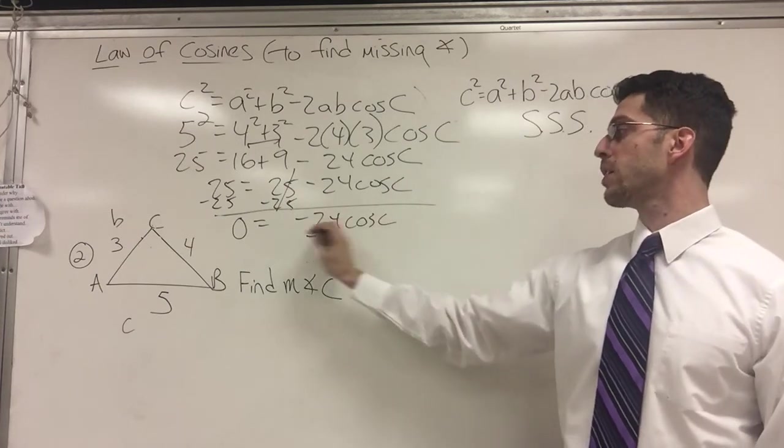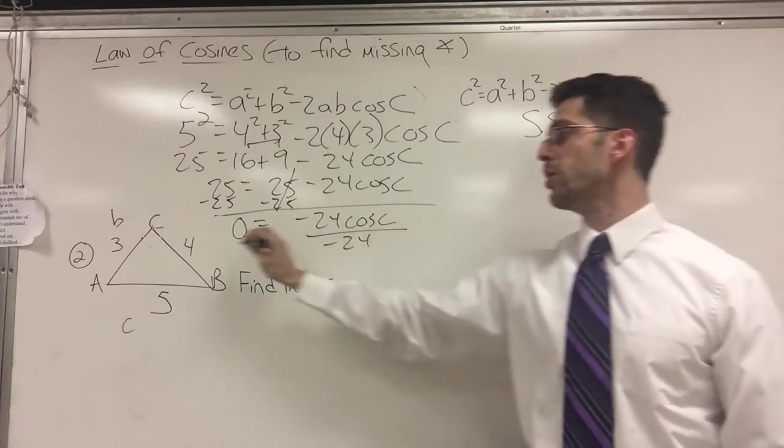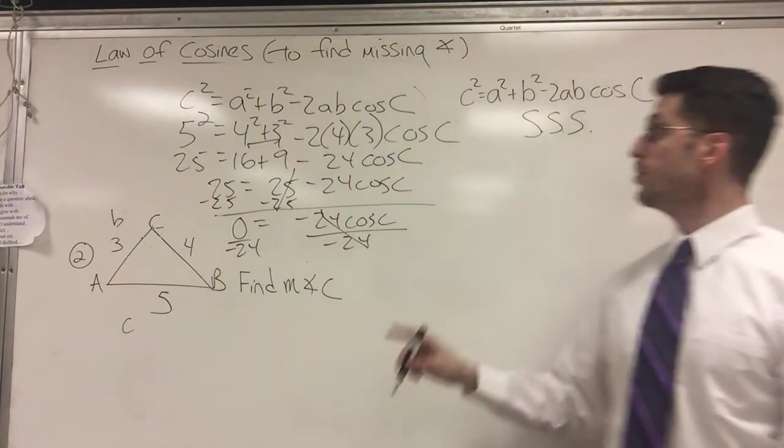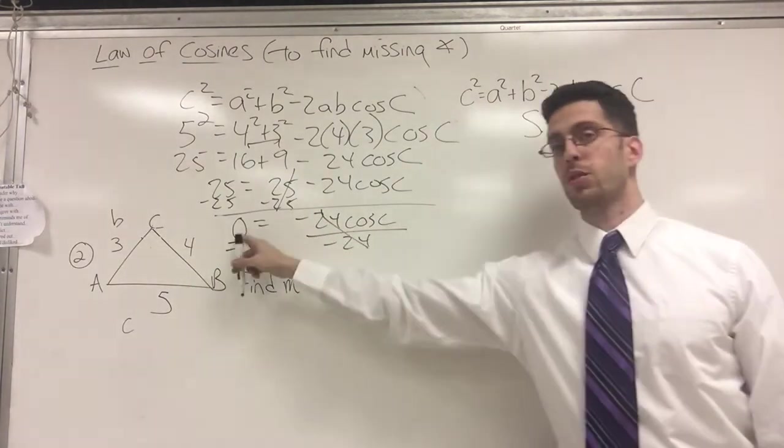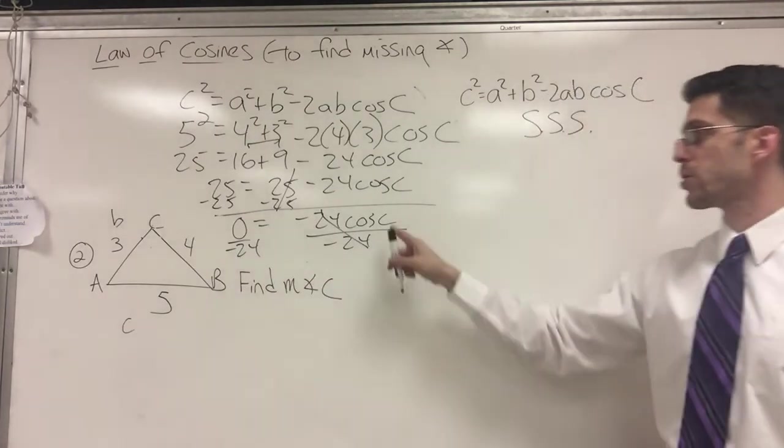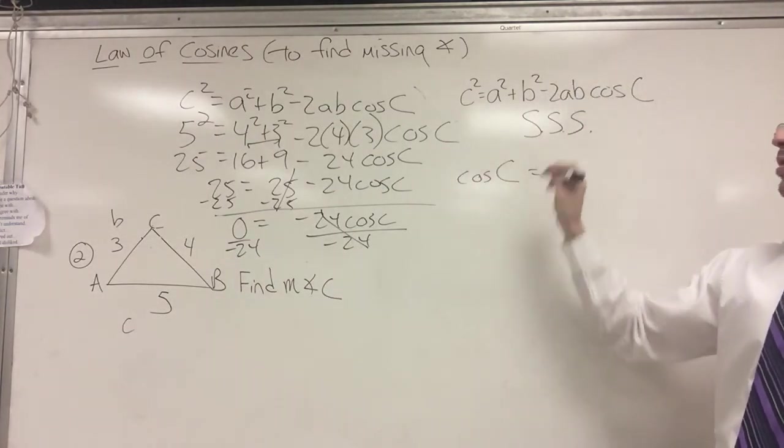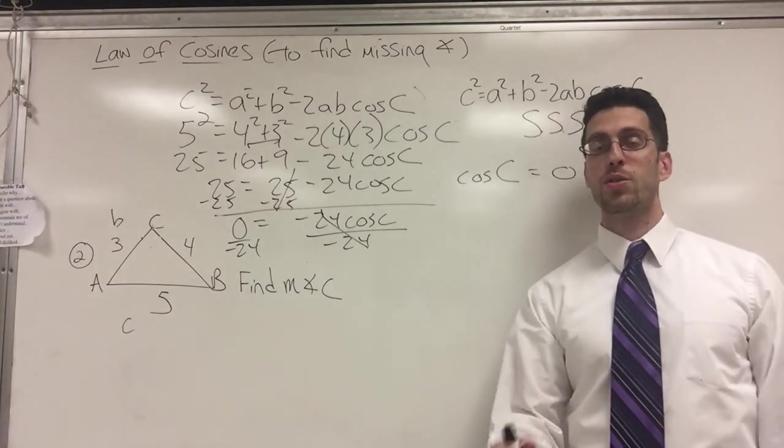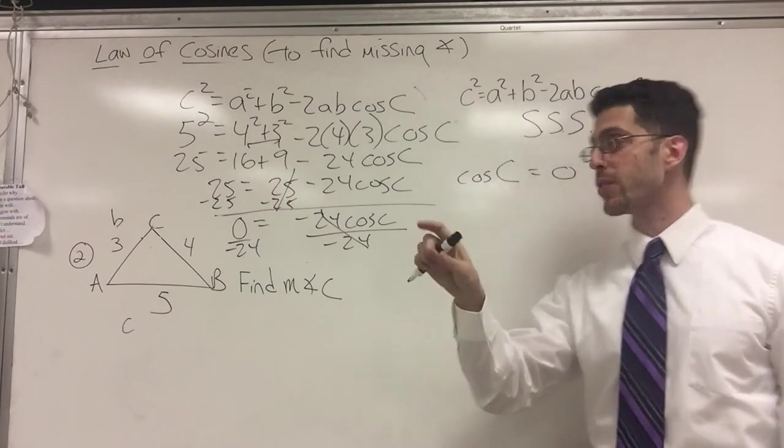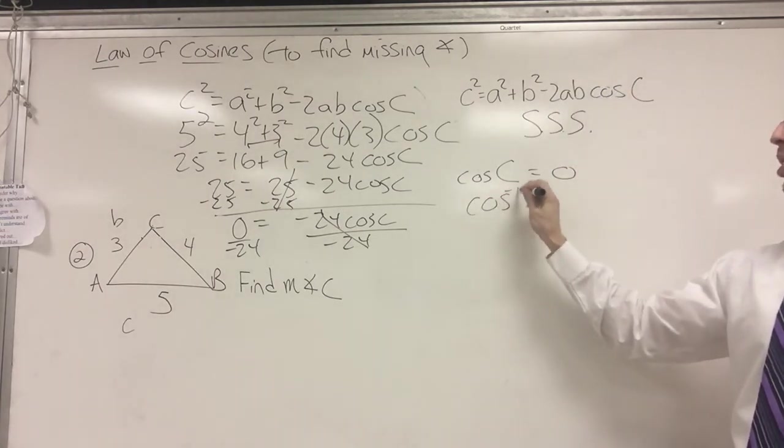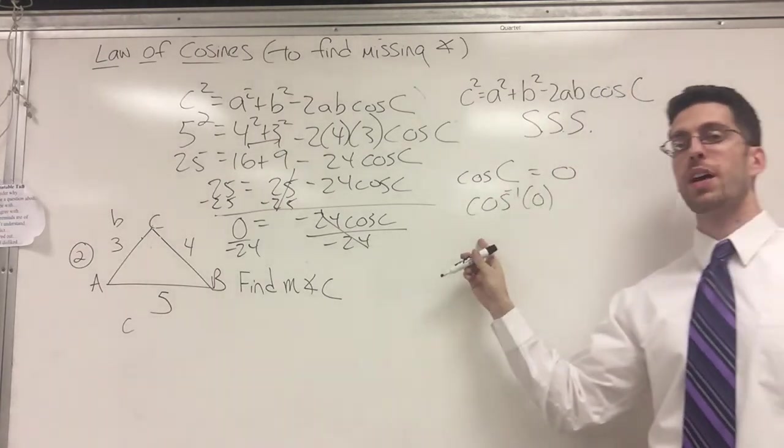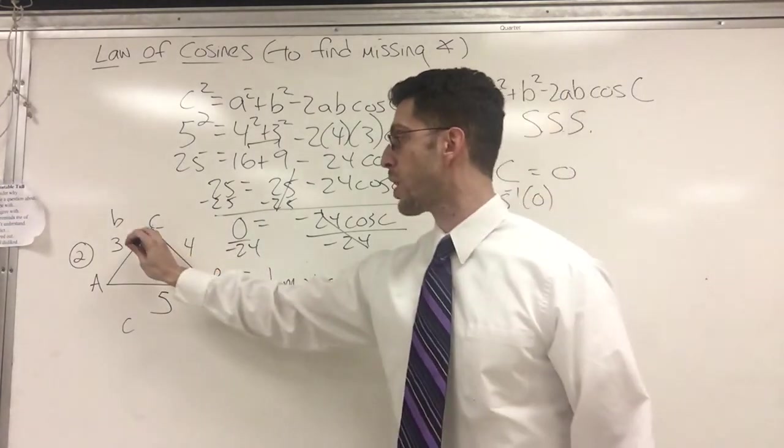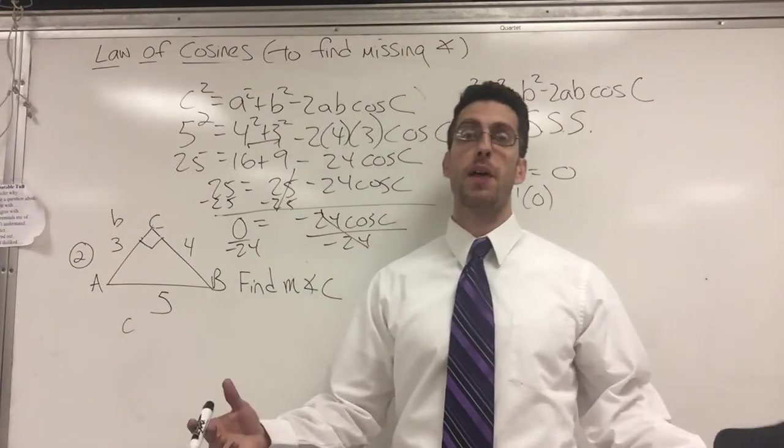So 0 equals negative 24 cosine C. Divide by negative 24. Negative 24 cancels out. And 0 divided by anything is 0. So cosine C equals 0. Almost done. What do you do? Get your calculator. Cosine inverse of 0. And you don't even have to round, because it gives you a great answer. 90 degrees. We already knew that. Put the box. Everybody's happy.